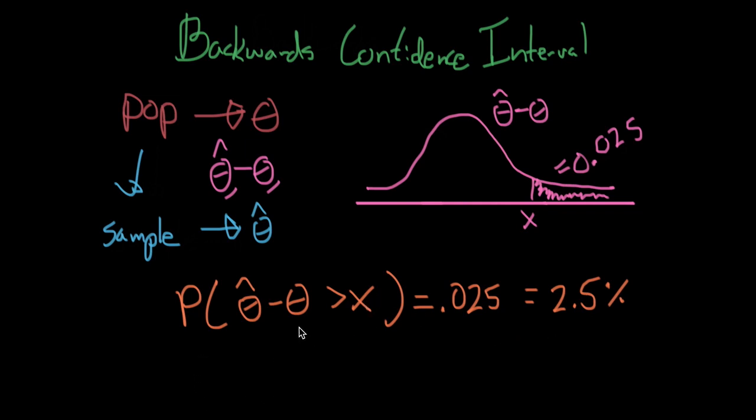Now, you might already sort of see the trick that I'm going to do here. But we're going to do one algebraic step. We're going to move theta over onto the right-hand side of the inequality, and we're going to move x onto the left-hand side. So for those that are familiar with algebra, this should be pretty simple. In this case, we're going to get theta hat minus x is greater than theta equals again 2.5%.